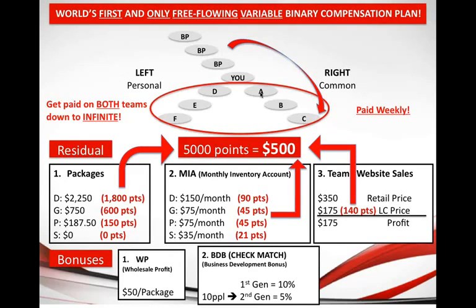After you personally help ten people get started, the company also gives you five percent of the checks of the people your people help to get started. So if person A helped person B get started, and A made ten thousand and B made ten thousand next week, you'd get ten percent of A — one thousand dollars — and five percent of B — five hundred dollars — for a total bonus of one thousand five hundred dollars. The more people you help become successful, the more successful you will be.